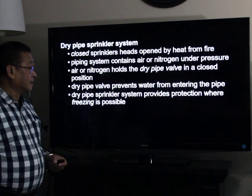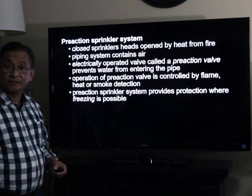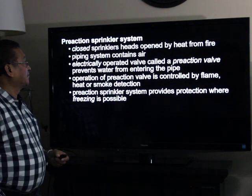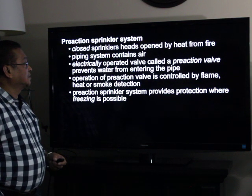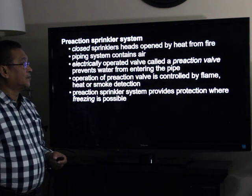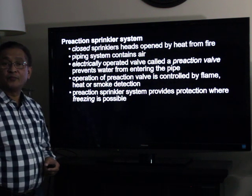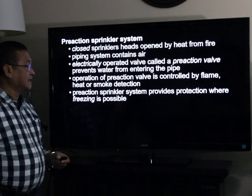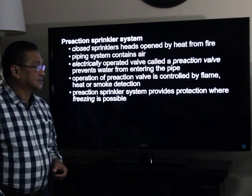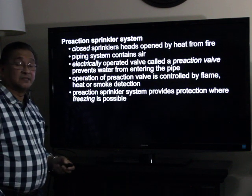The dry pipe sprinkler system provides protection in areas where freezing is possible. Pre-action sprinkler systems have closed sprinkler heads opened by heat from the fire. The pipe system contains air. An electrically operated valve called the pre-action valve prevents water from entering the pipe. Operation of the pre-action valve is controlled by flame, heat, or smoke detection. Pre-action sprinkler systems also provide protection where freezing is possible.